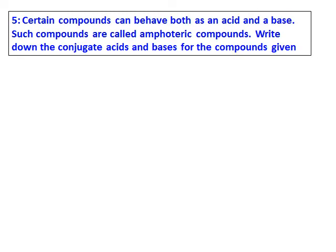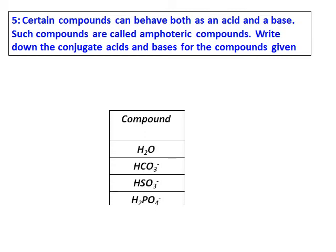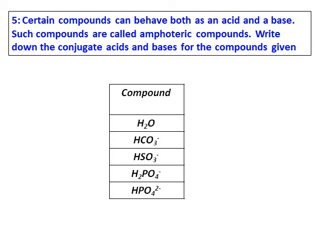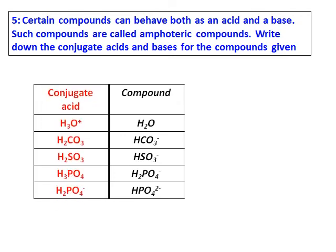Certain compounds can behave both as an acid and a base. Such compounds we call amphoteric compounds. Write down the conjugate acids and bases for the compounds given. The compounds given are water, bicarbonate, bisulfite, H₂PO₄⁻ and HPO₄²⁻. In order to write the conjugate acid, I keep saying that the acid has one H extra. So, add an H⁺ to the compound. So, the conjugate acids are H₃O⁺, H₂CO₃, H₂SO₃, H₃PO₄ and H₂PO₄⁻.